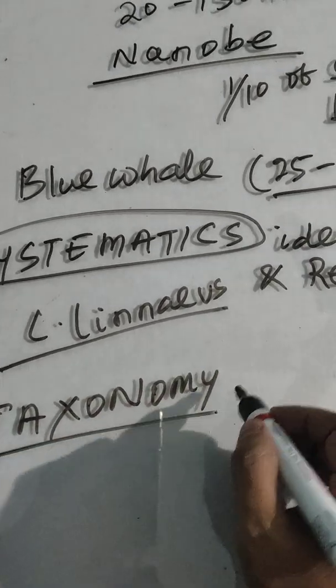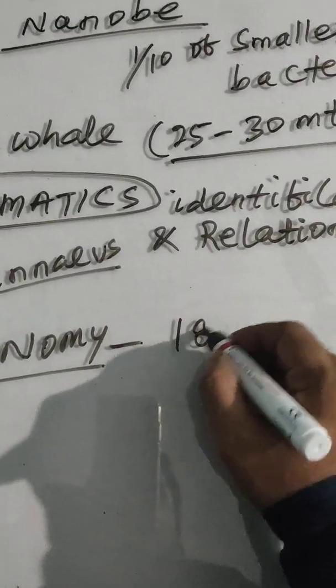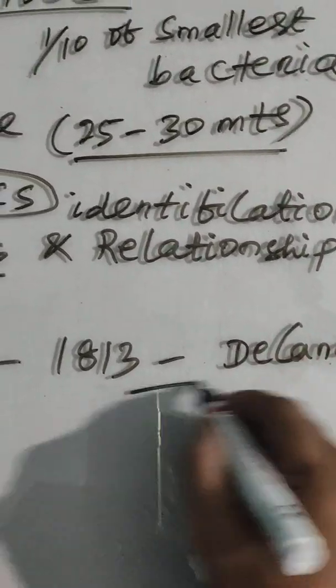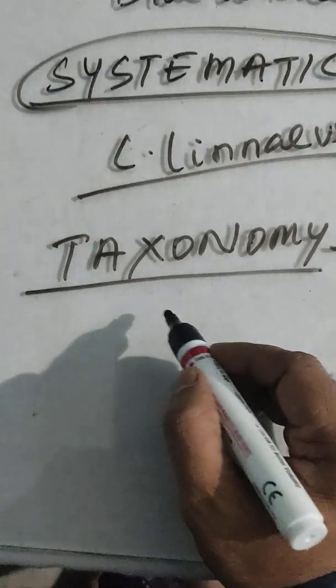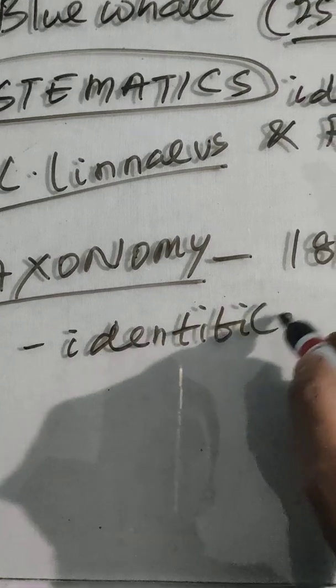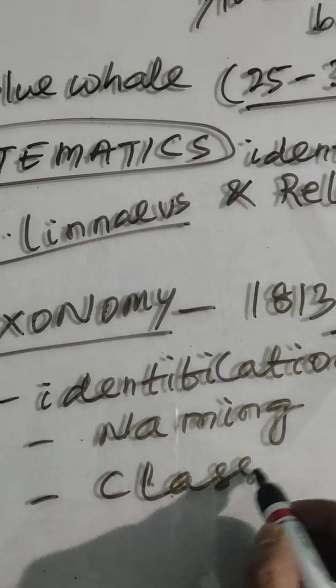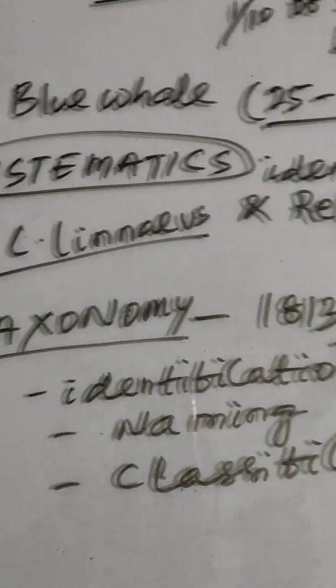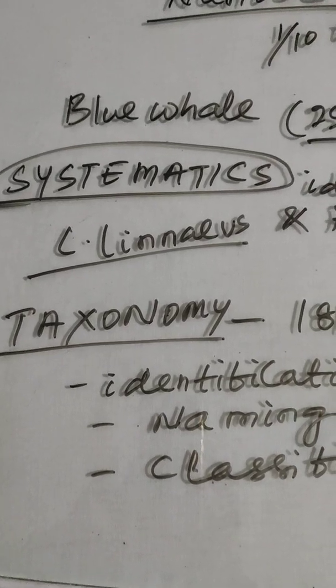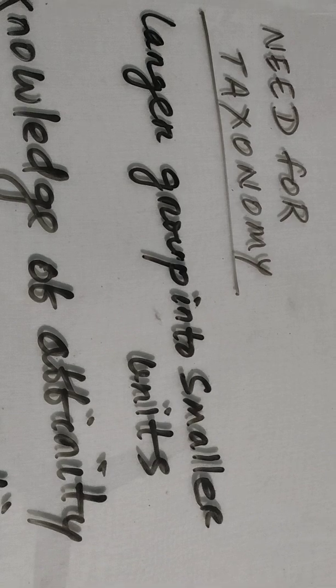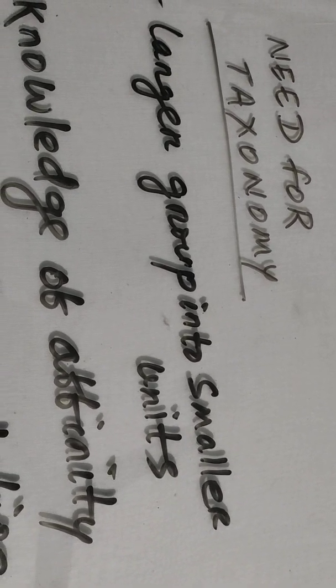What is taxonomy? It is a very precise process which was first introduced in 1813 by De Candolle. It deals with identification, naming, and classification. The basic difference between systematics and taxonomy is that taxonomy is more precise. The first need for classification is the division of larger groups into smaller units, so that it becomes easier to know about all organisms in detail.